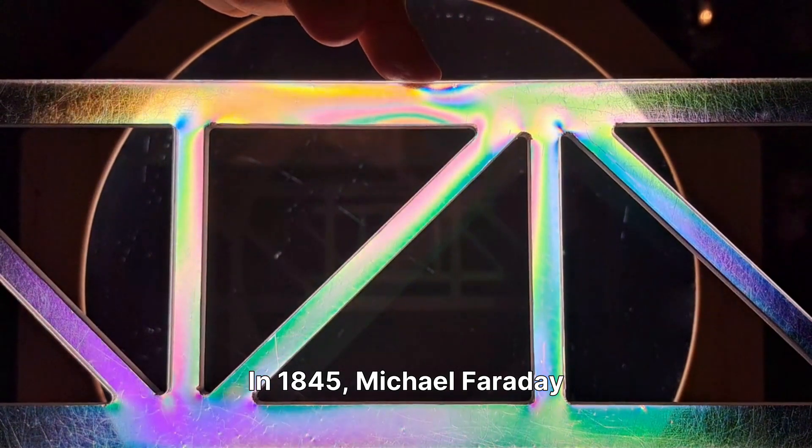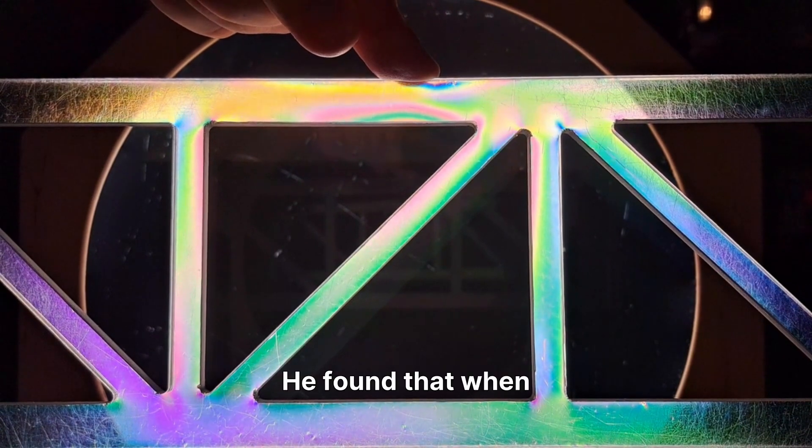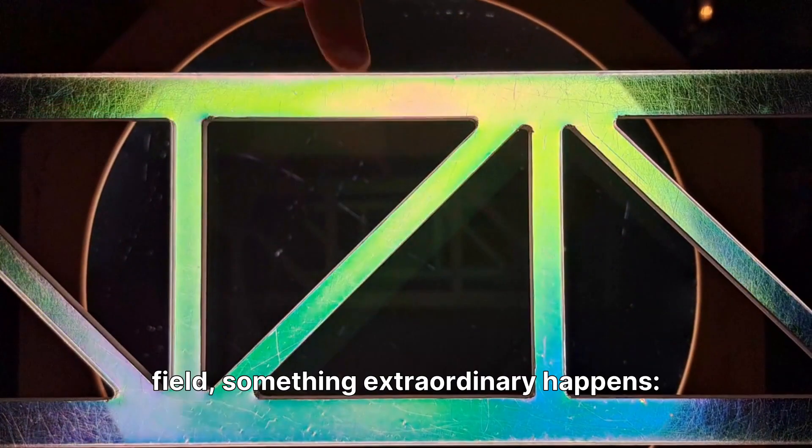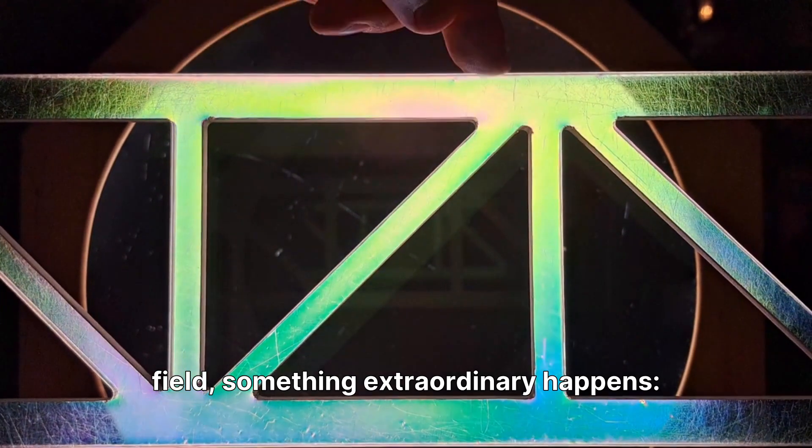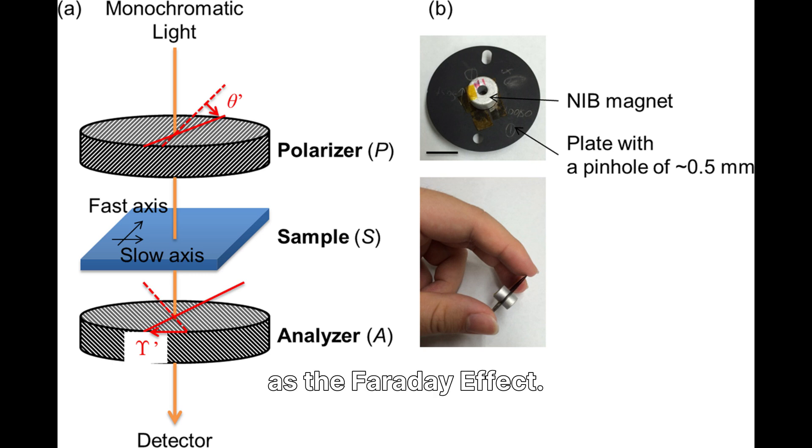In 1845, Michael Faraday made a discovery that would change physics forever. He found that when you shine light through certain materials in the presence of a magnetic field, something extraordinary happens. The light twists. This phenomenon became known as the Faraday effect.